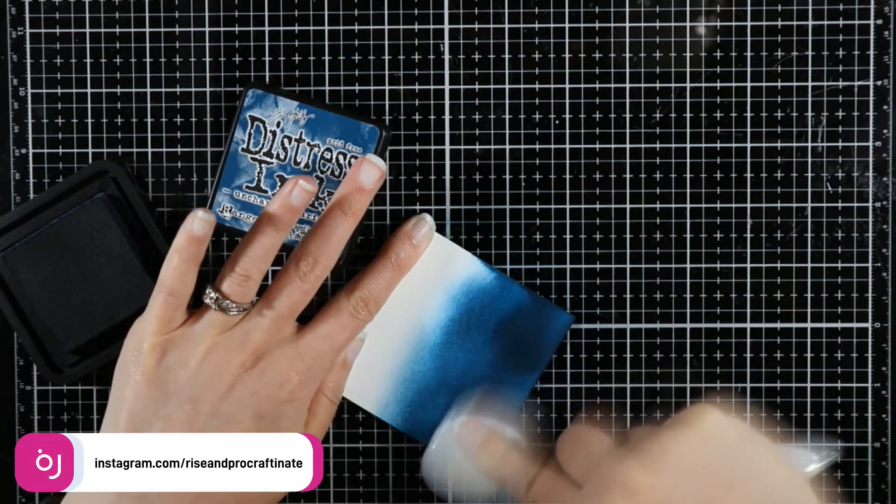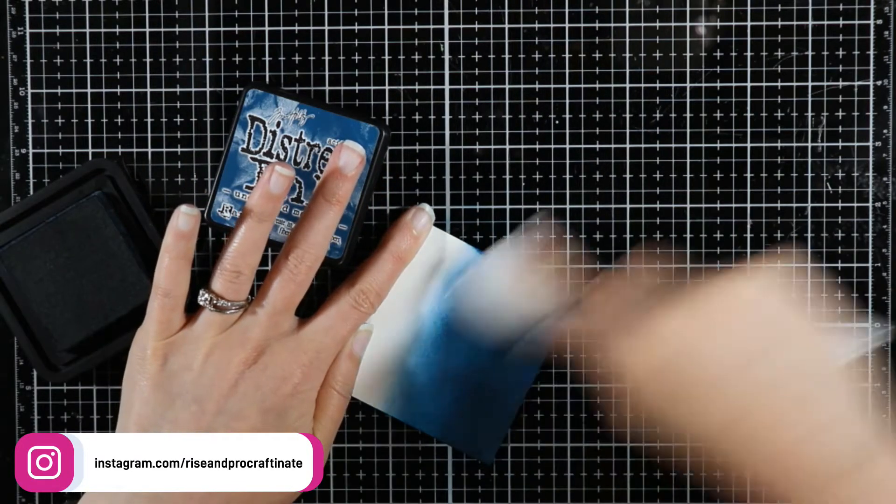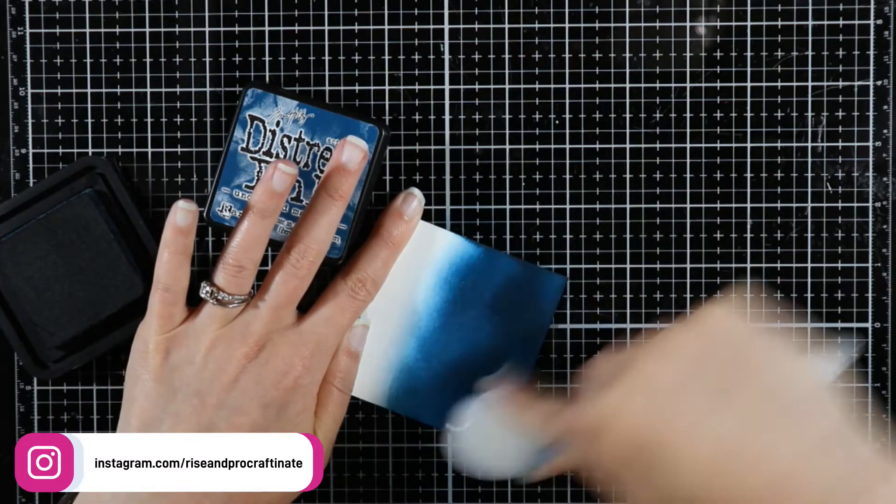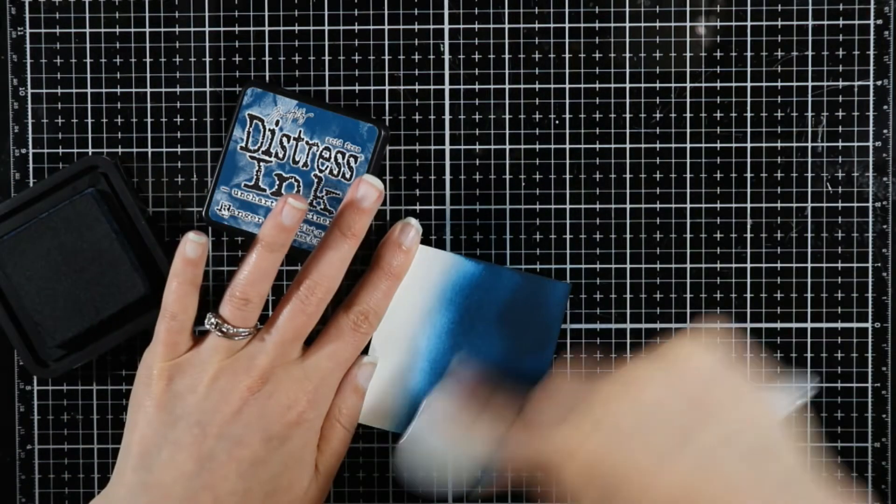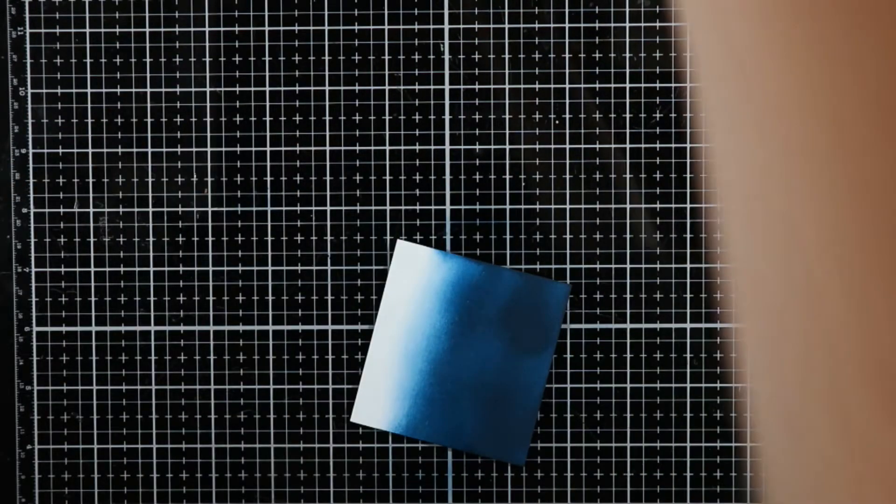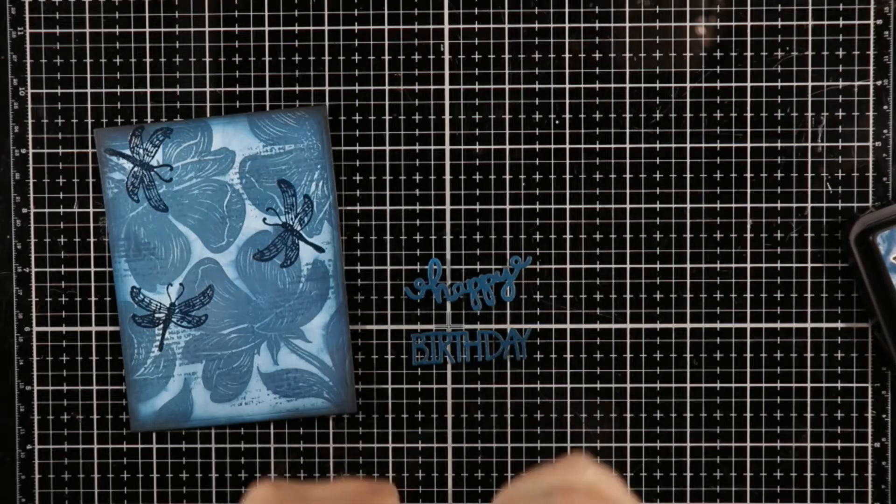Now I want to do my sentiment, but again I want this card to be tone on tone and match the theme that I have here. So I'm just taking a piece of white cardstock, blending some distress ink on it in that same Uncharted Mariner, and I'm going to use this to die cut my sentiment. I just use a Memento die set that I have. It says Happy Birthday.